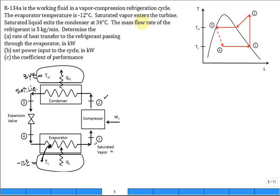The mass flow rate is 5 kilograms per 60 seconds. We need to find the rate of heat transfer: Q_L = m_dot times (H1 minus H4). Then W_net equals m_dot times (H2 minus H1).